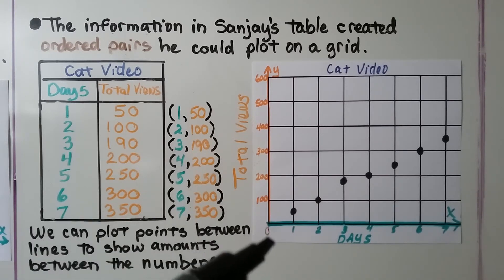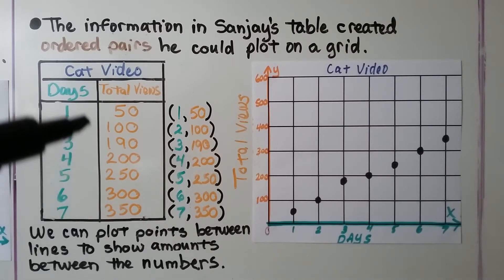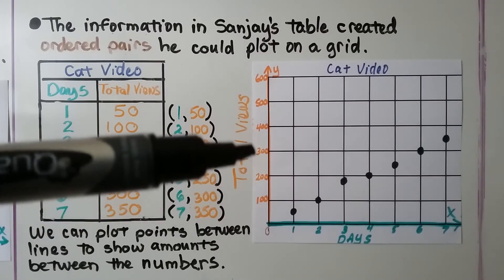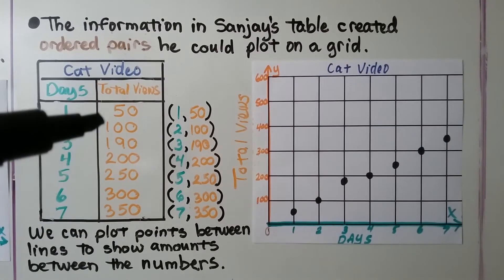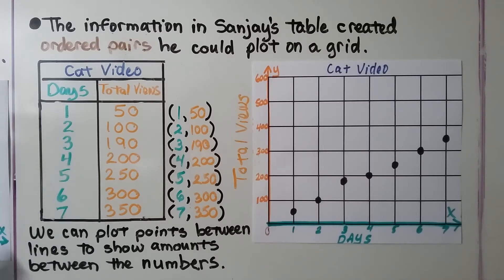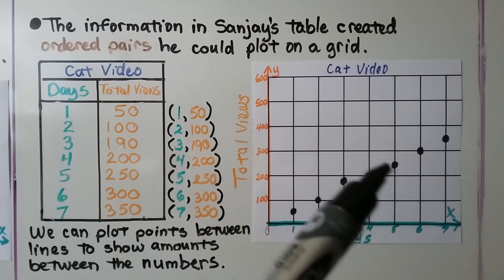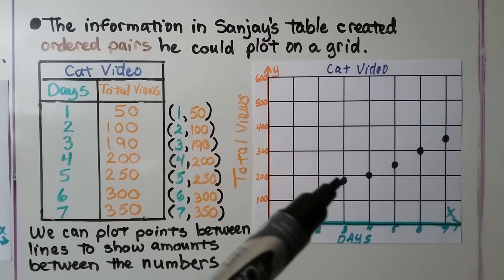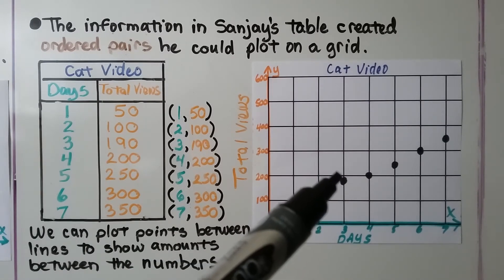On the graph we have one through seven days, matching the table. Because the values are mostly in increments of 100, the y-axis goes 100, 200, 300, 400. On days when he has 190 or 250 or 350, we can plot the points between the lines to show those in-between amounts. For 250 on day five, we have it between 200 and 300 — that would be 250. For 190 on day three, it's almost at 200, but just below at 190.